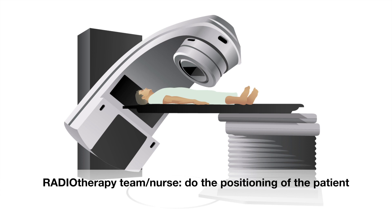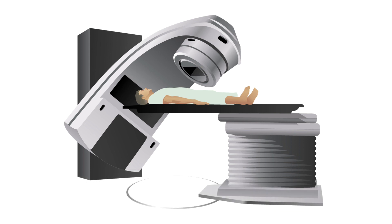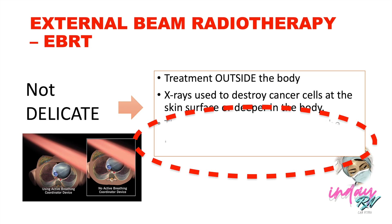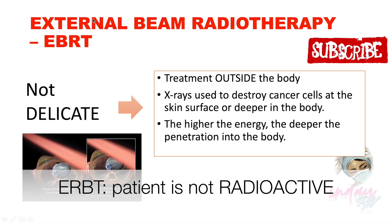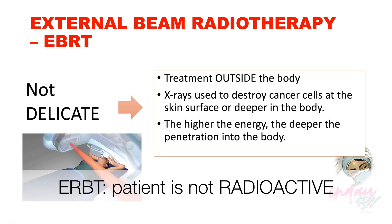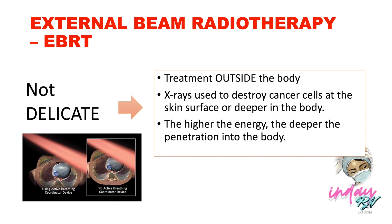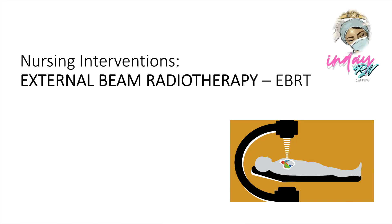In external beam radiation therapy, positioning the patient is vital. The radiation team will work together during a simulation so the patient lies in a comfortable position during treatment. It is imperative that the patient lies still, so cushions and restraints are used to help maintain positioning. Note that the higher the energy, the deeper the penetration into the patient's body. Also note that in EBRT, the patient is not radioactive because the radiation is done outside the body.